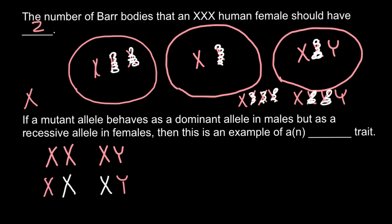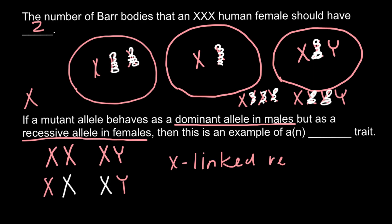Now consider a male with a defective X chromosome carrying the recessive allele, and a Y chromosome. Because the male does not have another X chromosome to balance this recessive genetic disorder, it would be phenotypically visible and expressed. Such a recessive allele in males would behave as dominant — only one copy would be enough to express this genetic disorder. But in females, having one normal X chromosome with the dominant allele means the genotype would be normal. So if a mutant allele behaves as dominant in males but recessive in females, this is an example of an X-linked recessive trait.